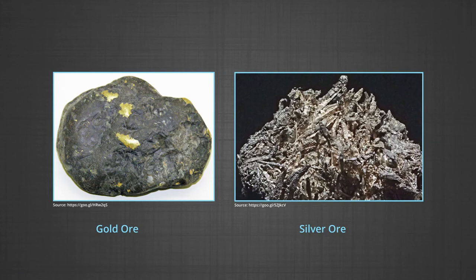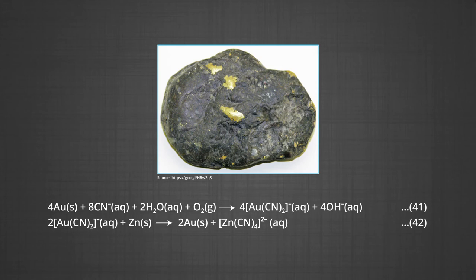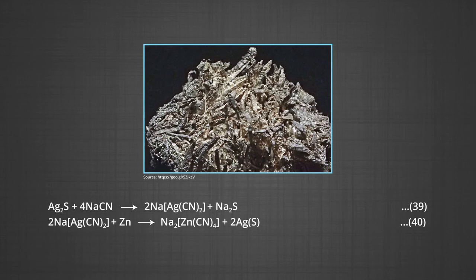Now let us understand extraction of gold and silver. Extraction of gold and silver involves leaching the metal with cyanide, which is also an oxidation reaction, as silver gets oxidized to silver ions or gold gets oxidized to gold ions. The metal is later recovered by displacement method, which is a reduction process, with zinc acting as a reducing agent. The reaction is: Au + CN⁻ + H₂O + O₂ → [Au(CN)₂]⁻ + OH⁻. The gold cyanide complex then reacts with zinc to form gold and tetracyanozincate. In the same manner, silver is also obtained.